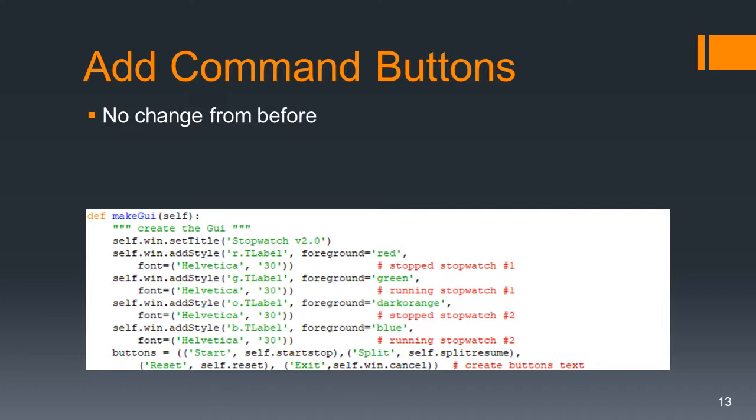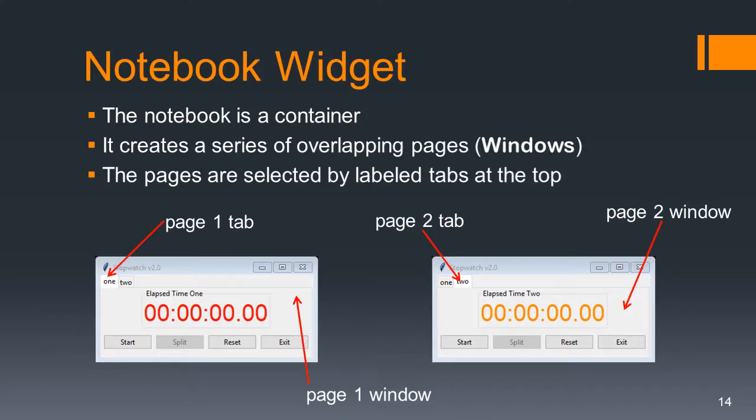The command buttons line hasn't changed — that code is the same as before. Here is the notebook widget. The notebook is really nothing more than a widget which is a container of other widgets. The way it works is it creates a series of overlapping pages which are TK Entertoy windows, and the pages are selected by label tabs at the top. On the left example we have page one displayed, and on the right we have page two displayed.